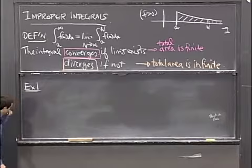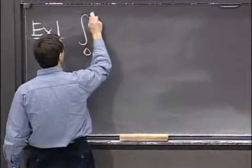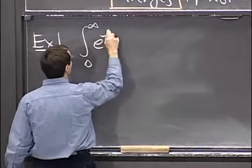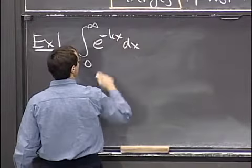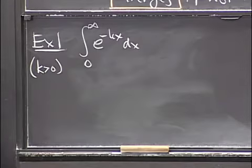The first example is the integral from 0 to infinity of e to the minus kx dx, where k is going to be some positive number, some positive constant.